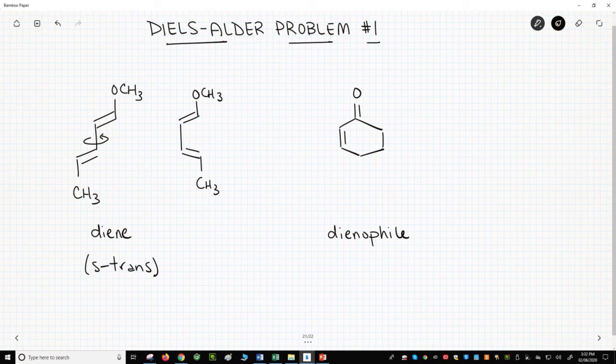Great. What's next? Now we need to determine the regiochemistry. The diene has two EDGs on it, the methoxy group and the methyl. Alkoxy groups are a stronger EDG than an alkyl group, so the methoxy group will drive our regiochemistry.